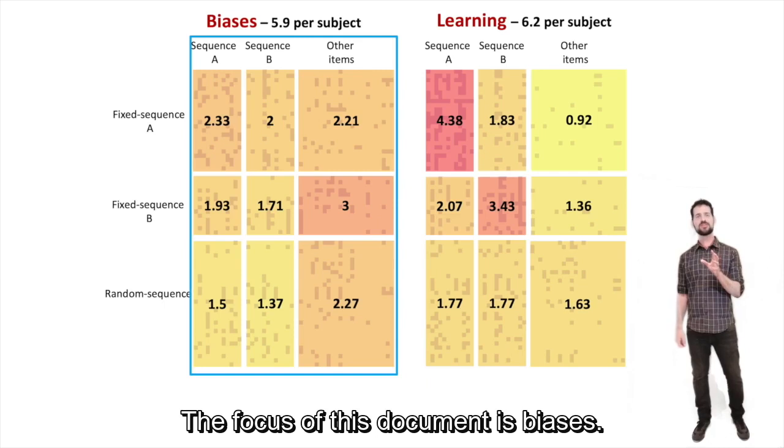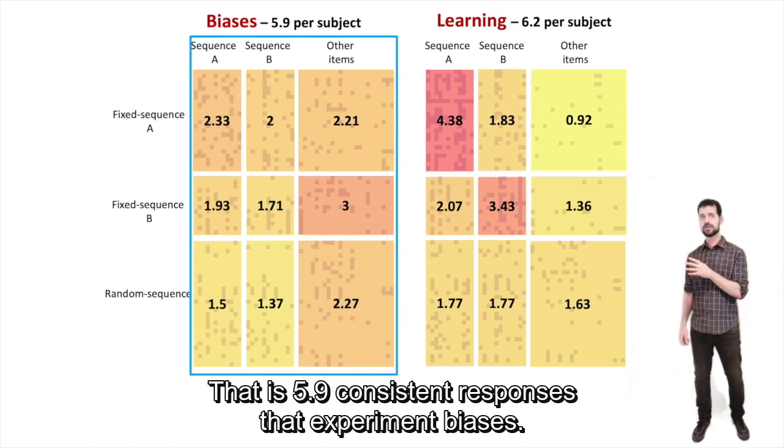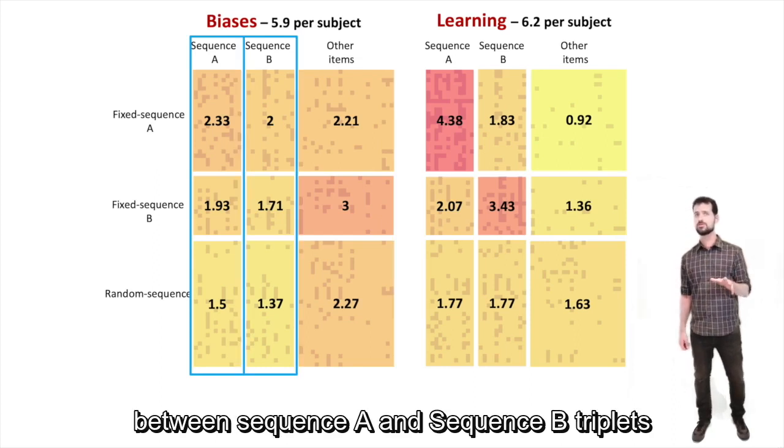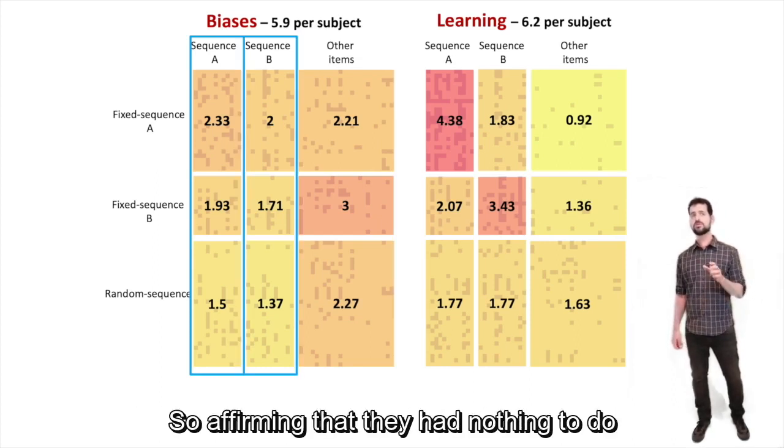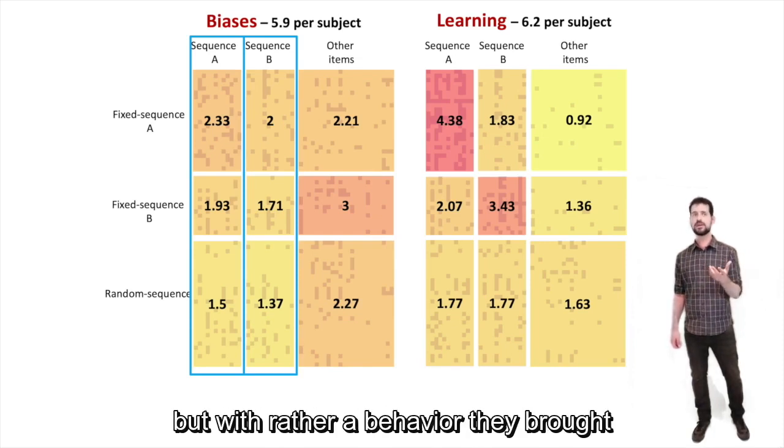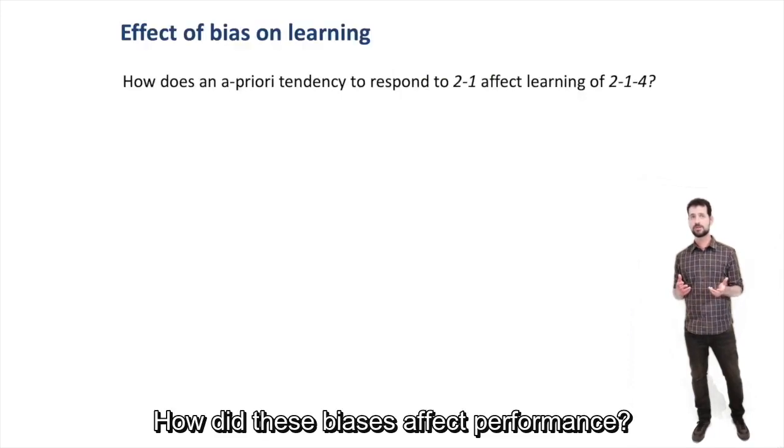The focus of this talk is on biases. We found an average of 5.9 biases per participant, that is 5.9 consistent responses at experiment onset. These biases distributed equally between sequence A and sequence B triplets in all participants, so affirming that they had nothing to do with the stimuli we presented them, but were rather a behavior they brought into the experiment with them.